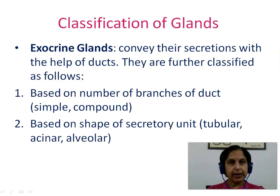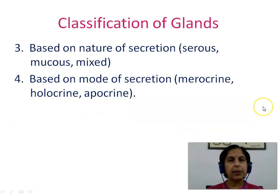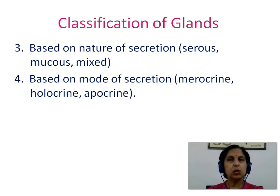Exocrine glands convey their secretions with the help of ducts and can be further classified based on the number of branches of the duct into simple and compound. Based on the shape of the secretory unit, they are classified into three types: tubular, acinar, and alveolar. Based on the nature of secretion into serous, mucus, and mixed type. And based on the mode of secretion into merocrine, holocrine, and apocrine.